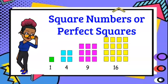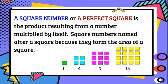Welcome to our lesson Square Numbers or Perfect Squares. A square number or a perfect square is a product resulting from a number multiplied by itself. Square numbers are named after a square because they form the area of a square.